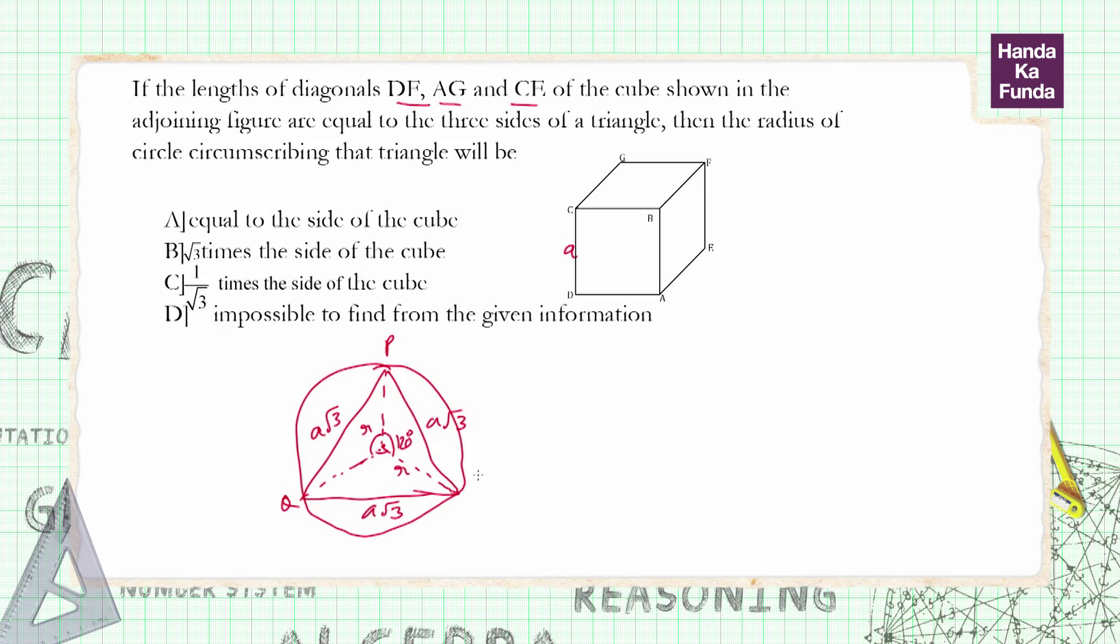The center is O. If you consider triangle OPR, it has two sides of length r and the central angle is 120 degrees. Then what will be the third side? The third side comes out as r√3 when two sides are r and the central angle is 120 degrees.